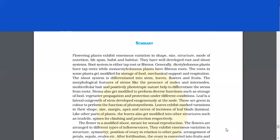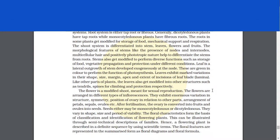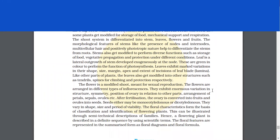Summary. Flowering plants exhibit enormous variation in shape, size, structure, mode of nutrition, lifespan, habit and habitat. They have well developed root and shoot systems. Root system is either taproot or fibrous. Generally, dicotyledons plants have taproots while monocots have fibrous roots. The roots in some plants get modified for storage of food, mechanical support and respiration.